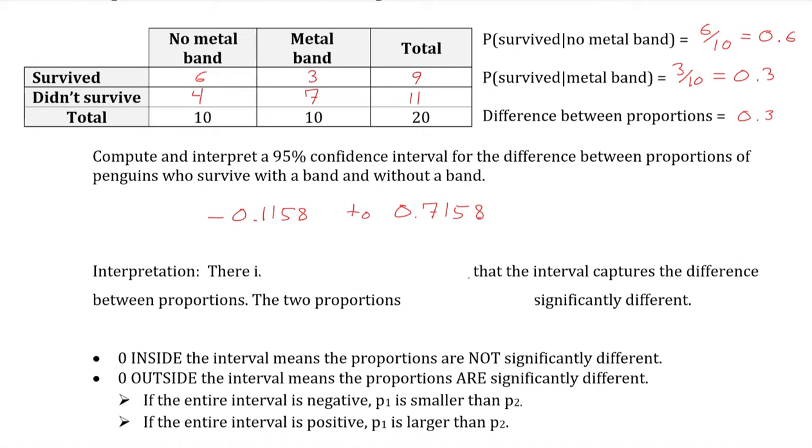Now, when we interpret this, we're going to interpret it like we typically do for confidence intervals. We're going to say that we are blank percent confident that the interval contains the value we're looking for. In this case, we would say that there is a 95% confidence, because we did a 95% confidence interval, that the interval itself captures the difference between proportions.